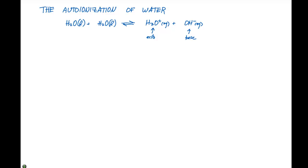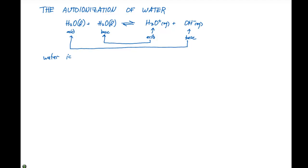So that means that we have conjugate acid-base pairs. If we have an acid here, that means one of the waters has to be a base. The other needs to be represented as an acid. And based on this, we can say that water is amphiprotic,